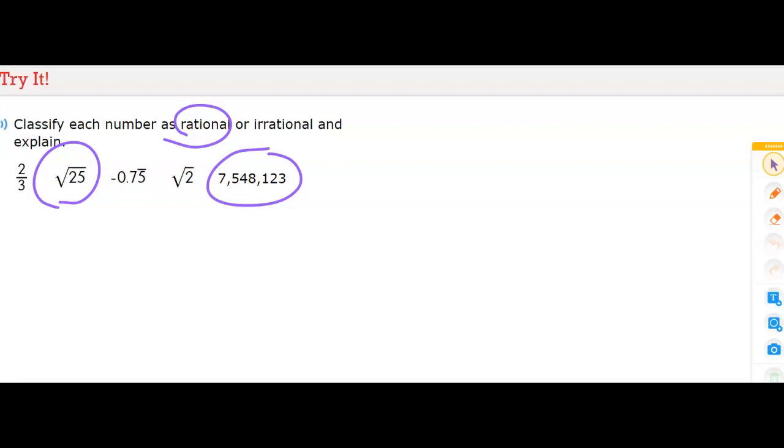And that's because it's an integer and the square root of 25 is a perfect square. It equals 5. Let's see. And negative 0.75 would also be rational because it's a repeating decimal.